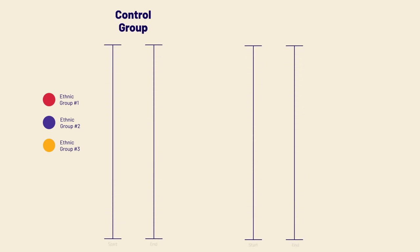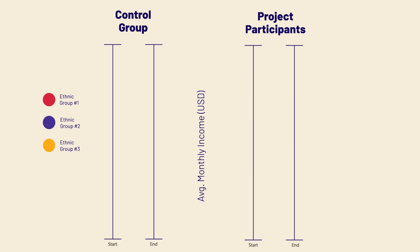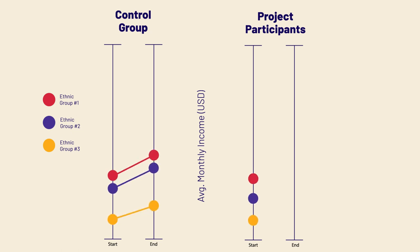Ethnic group one, ethnic group two, and ethnic group three. Let's look at those averages again, but broken out by the ethnic groups. Here's the start, and here's what happens in our control group — income rose across all groups pretty consistently.